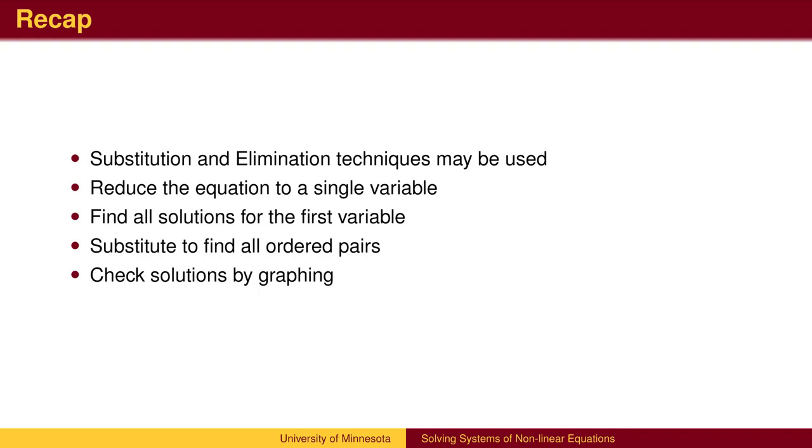To recap, the techniques to solve equations are the same as with one variable. Both the substitution and elimination methods may be useful to reduce the equation to one variable. We then solve the equation to find all the possibilities for one variable, substitute to find the values of the other variable to complete the ordered pairs. Knowledge of the graphs can help verify the answers.